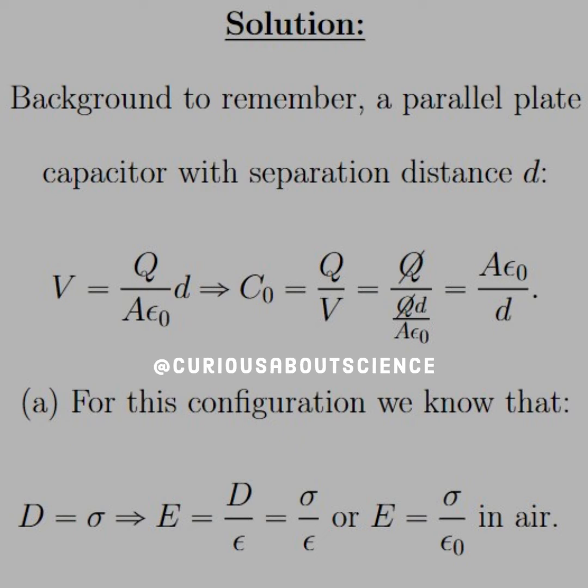So for configuration A, we know that from the last question, we just found that the electric displacement is equal to sigma, and we know that E equals D over epsilon, so plugged it in, and we see that in a dielectric material, E equals sigma over epsilon, but in air, E equals sigma over epsilon naught.